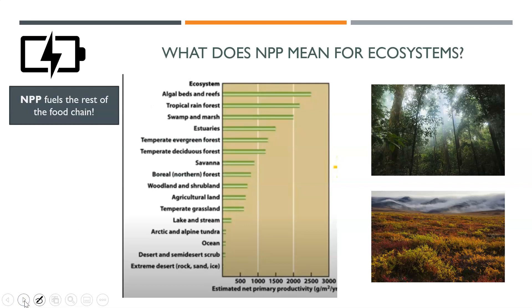So what does NPP mean for ecosystems? NPP fuels the whole rest of the food chain. Less NPP means less fuel; more NPP means more fuel.